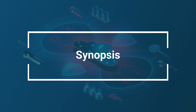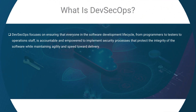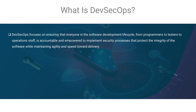If you're taking this course, I'm confident that you have some exposure to the term DevSecOps. That term is an abbreviated combination of development, security, and operations. DevSecOps focuses on ensuring that everyone in the software development lifecycle — from programmers to testers to operations staff — is accountable and empowered to implement security processes that protect the integrity of the software while maintaining agility and speed toward the end result of delivery.